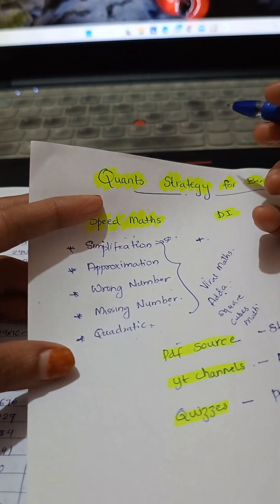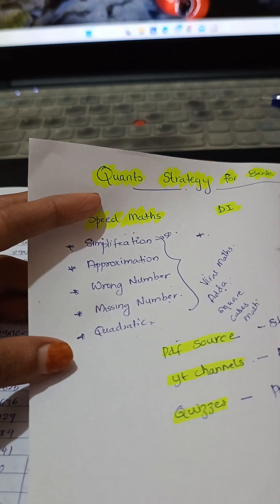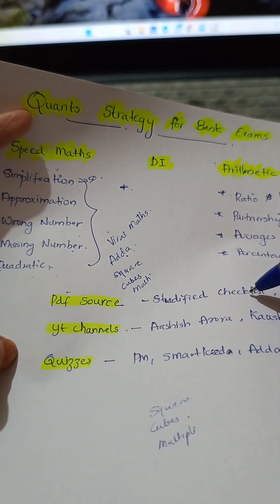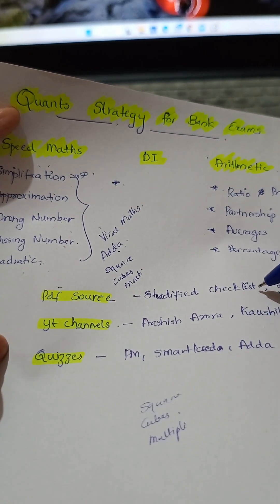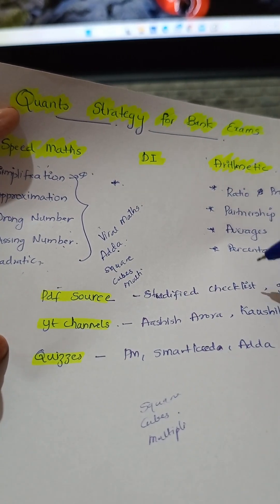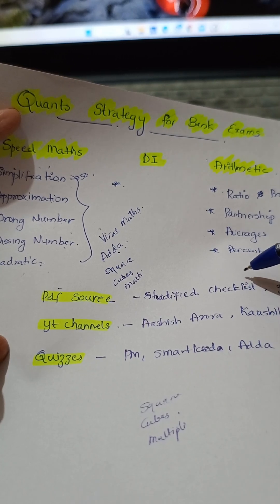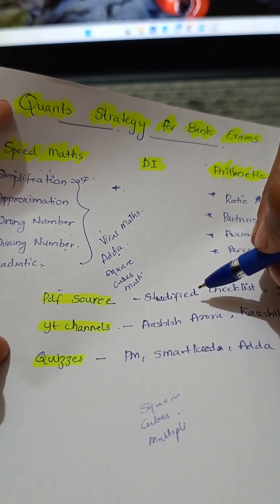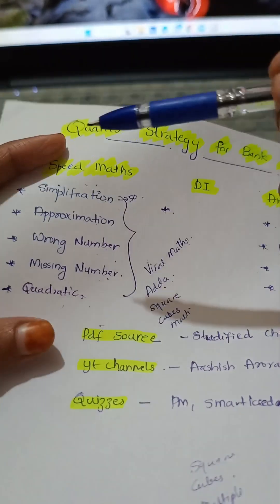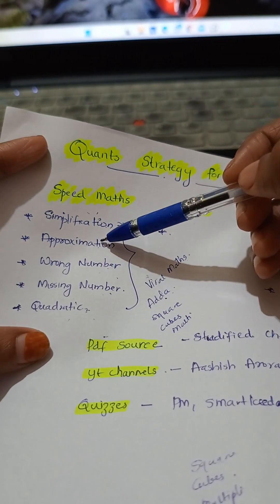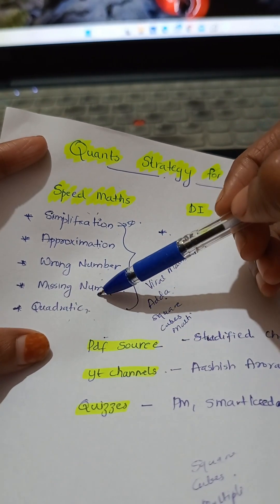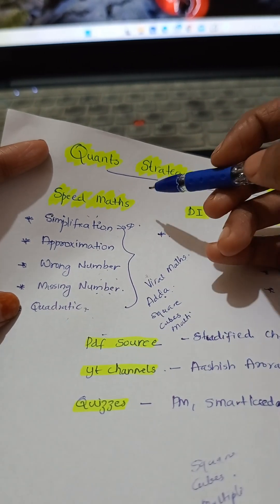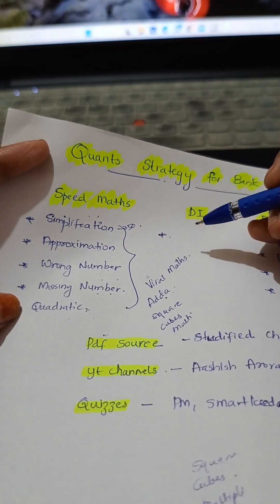I had already shared a PDF source — a certified checklist by Ashish Arora Sir. He provides a daily basis checklist in his Telegram channel. There you can see a checklist of simplification, approximation, wrong number, missing number, quadratic, and also arithmetic and DI with 20 questions each.